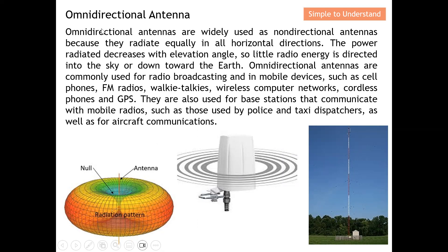Omni-directional antennas are widely used as non-directive antennas, meaning they don't aim at any specific direction because they radiate equally in all horizontal directions. The power radiated decreases with elevation angle, so little energy is directed into the sky or toward the earth. They are commonly used for radio broadcasts and in mobile devices such as cellular phones, FM radio, walkie-talkies, wireless networks, cordless phones, and GPS.